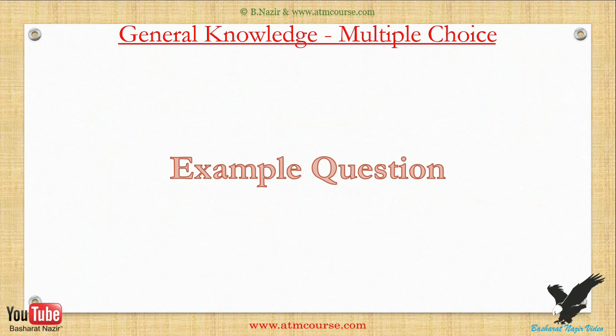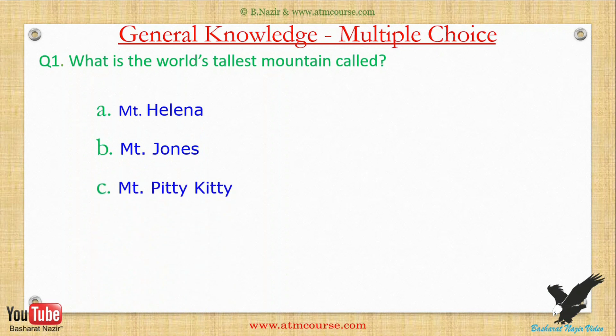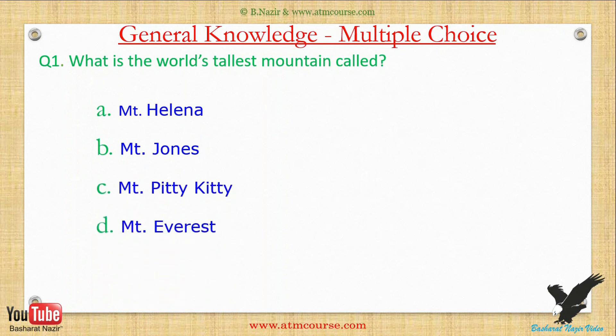Let us start with an example question. This example will give you a guide on how to do the exercise. In each question you will be presented with the question text, then you will be presented with four possible answers. Only one answer will fit the question, and finally, select the correct answer.